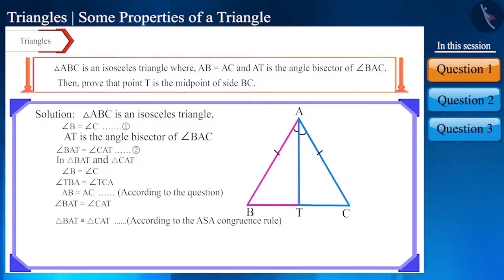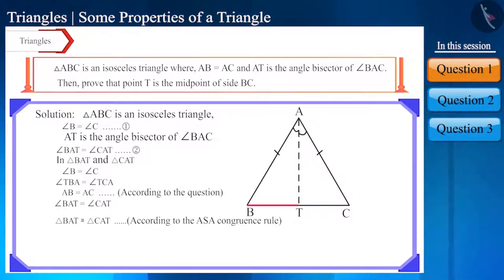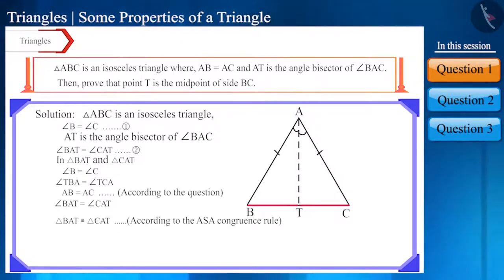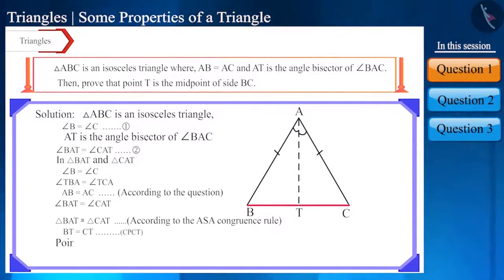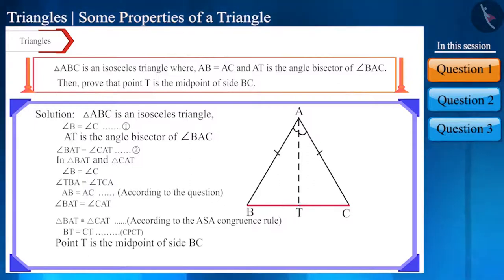We know that the corresponding parts of congruent triangles are equal. Therefore, side BT will be equal to side CT. So now we can say that point T is the midpoint of side BC.